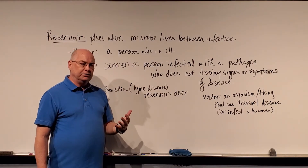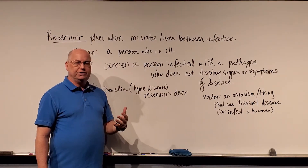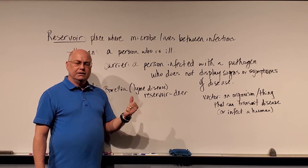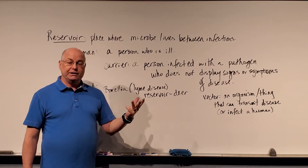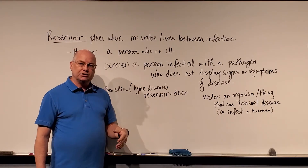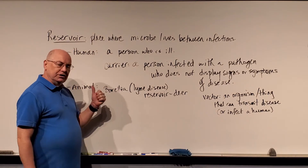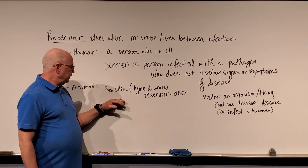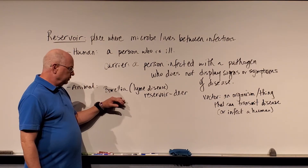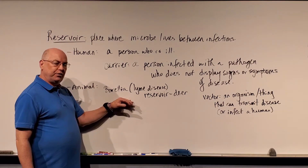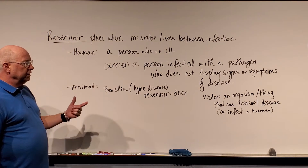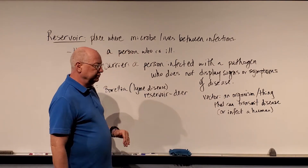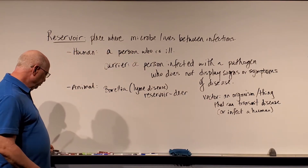A few common animal reservoirs — for rabies, for example, would be opossum, raccoons, cats and dogs infected with it, and bats. Birds, deer, pigs, cows — any animal that can serve as a reservoir would be an animal reservoir. The vector is something that can transmit the disease from the animal to a human.